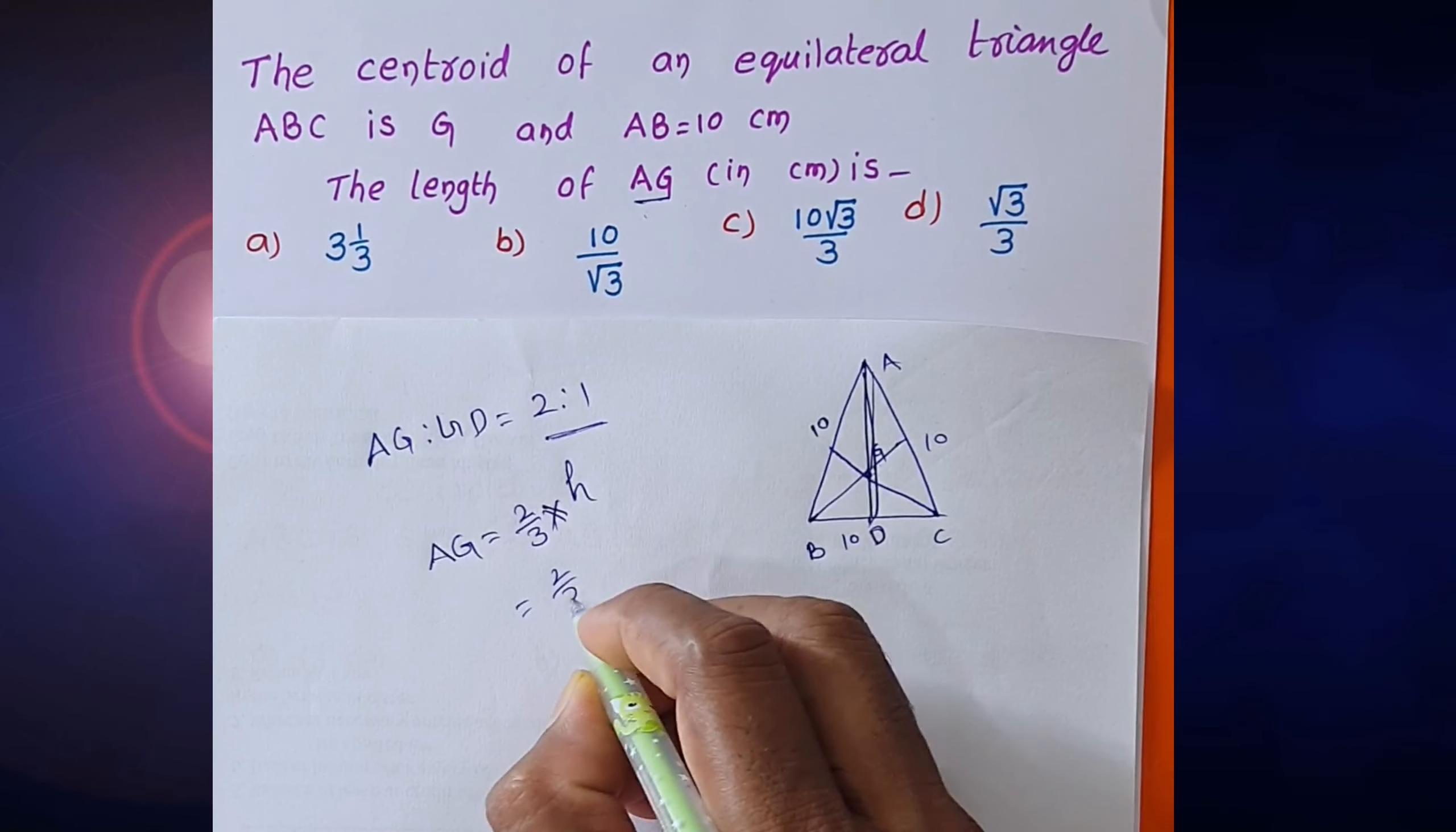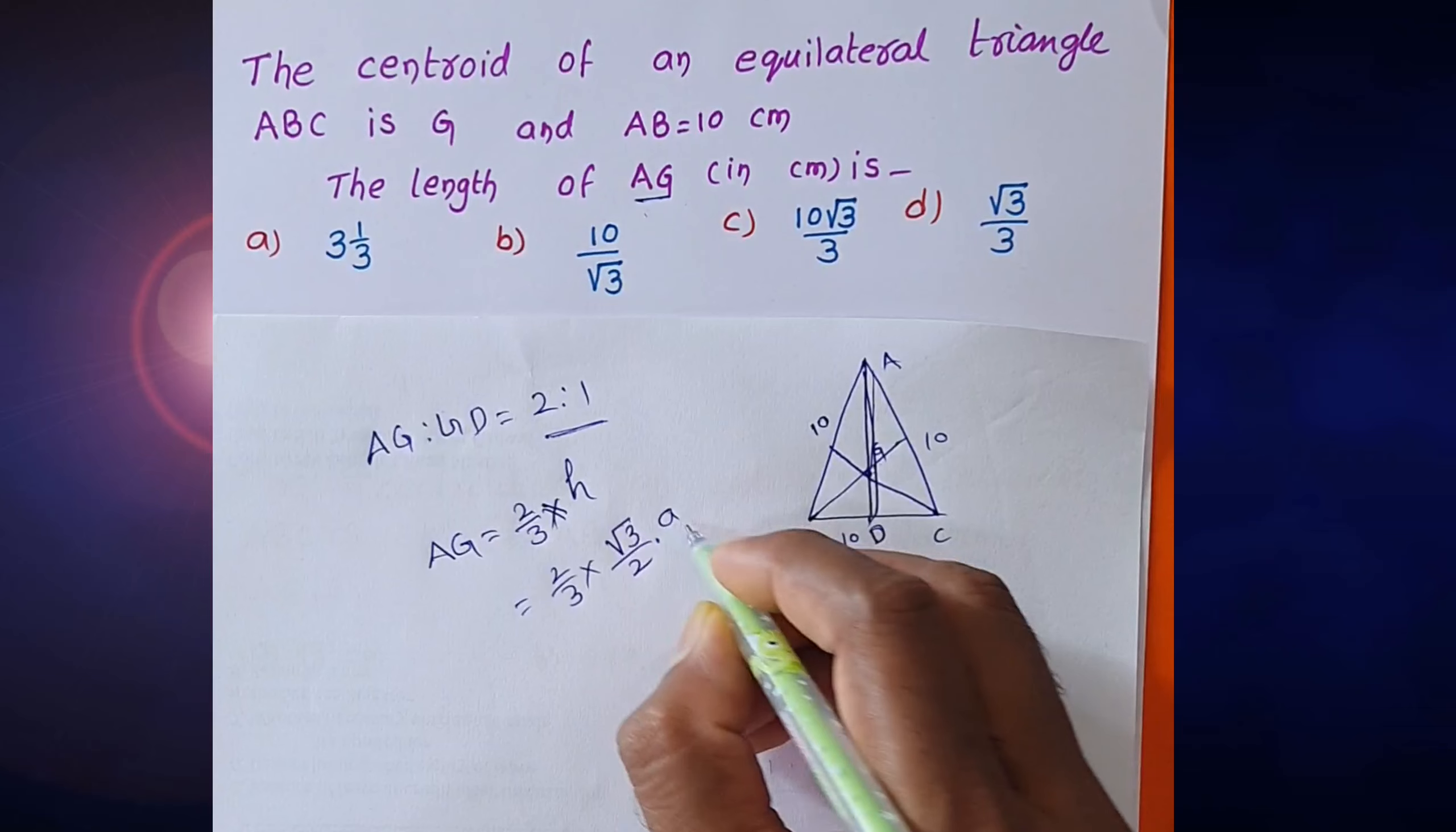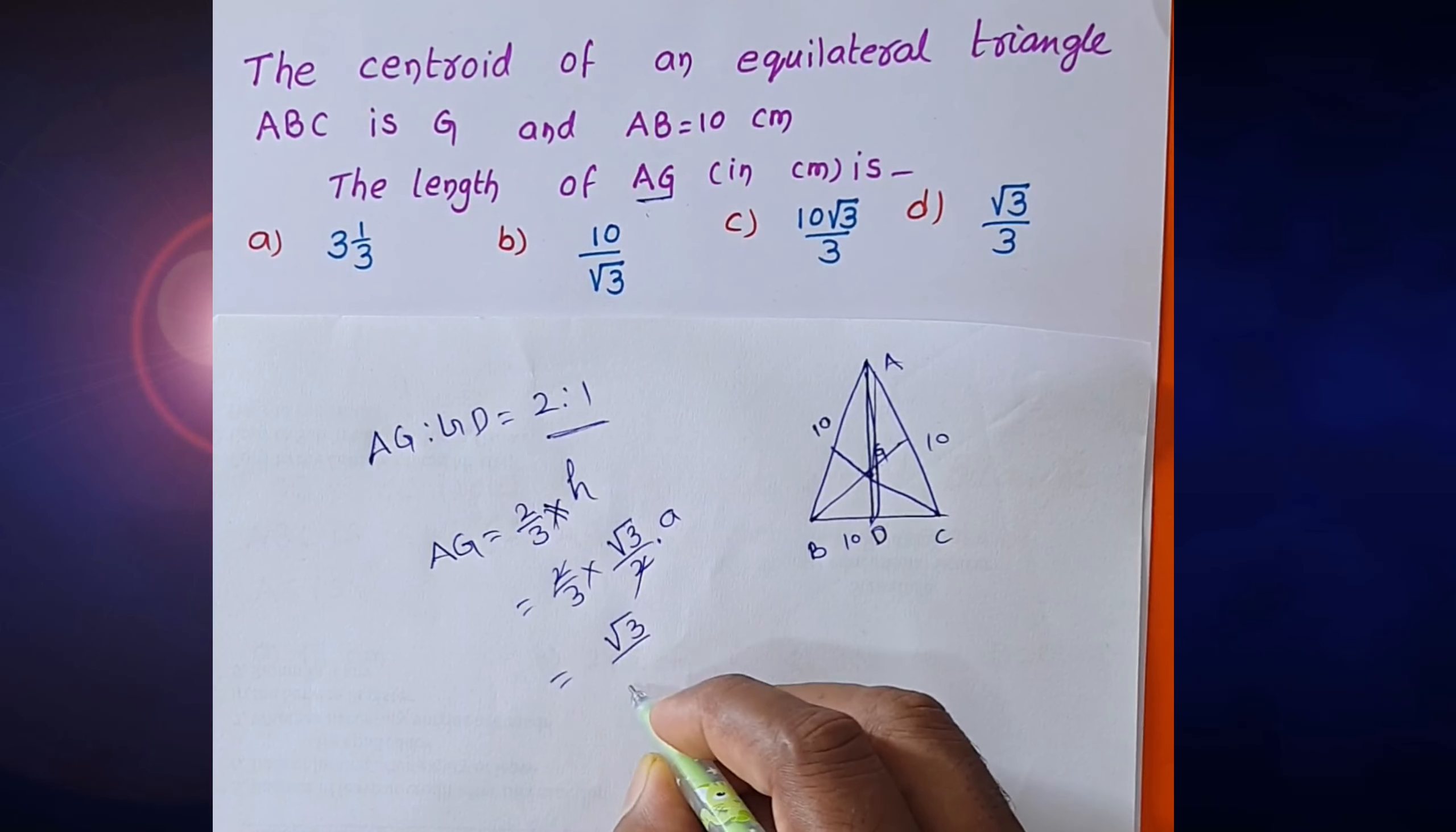We can see H. 2 by third into H value is root 3 by 2 into side. 2 to cancel. So root 3 by 3 into 10.